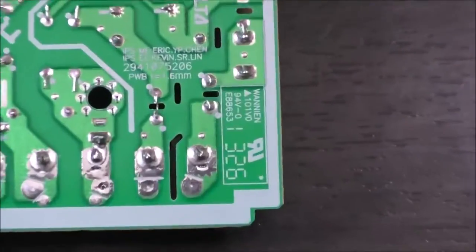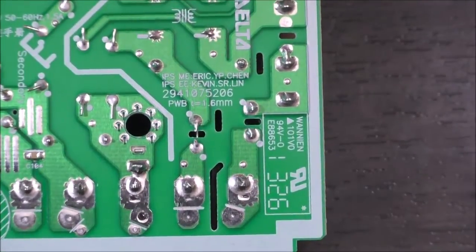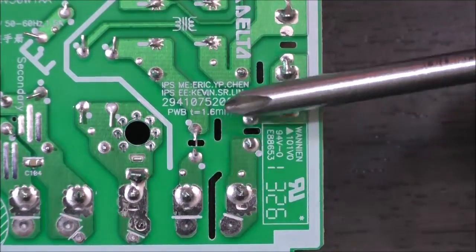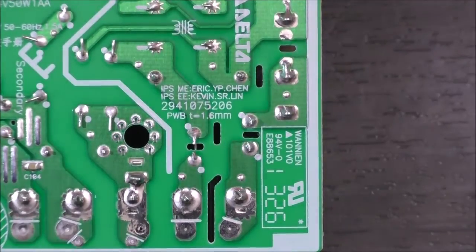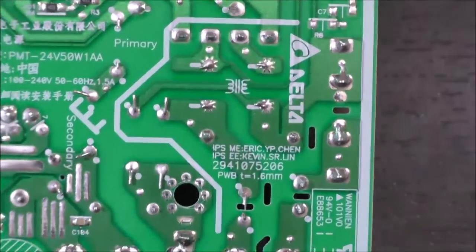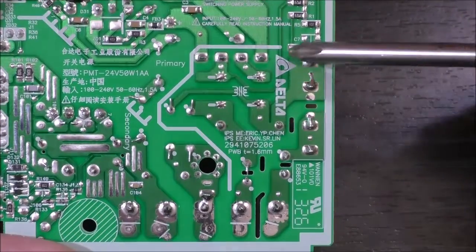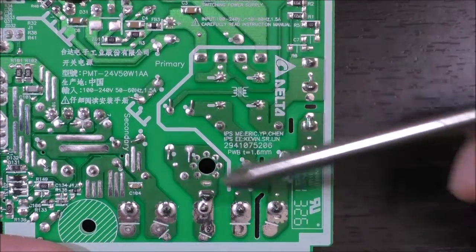First, if we look at the main input side, we can see the slots that were cut out. So again, this provides additional creepage distance between the high voltage side. Again, the high voltage area is demarcated by this white line. So everything here is the high voltage side.